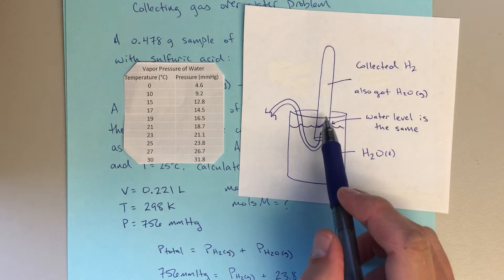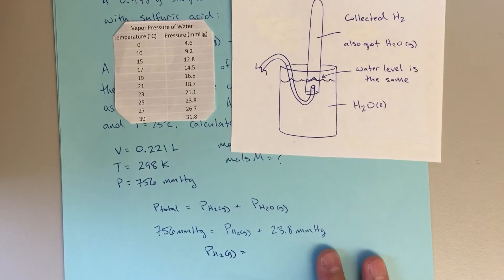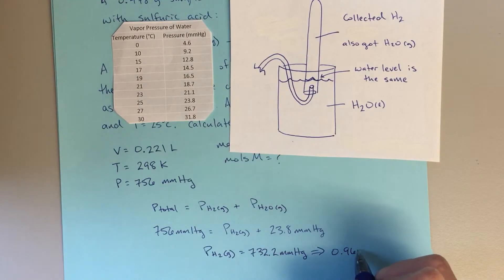That's going to equal my pH2 gas, which is what we're looking for. Plus 23.8 millimeters of mercury, which is the contribution, right, due to the vapor pressure of water inside of this gas collection tube. If I solve for pH2, so solving for pH2 gas, I ended up with 732.2 millimeters of mercury, which I can then convert to atmospheres, because I know I'm going to use the ideal gas law. And that's 0.963 atmospheres.